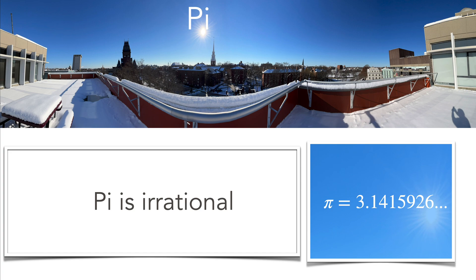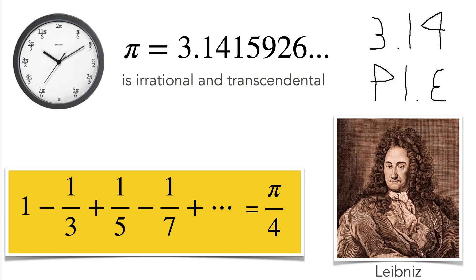Pi, the most exciting number, maybe, in mathematics. It's irrational, it's also transcendental. There's a formula of Leibniz, again using calculus, which is 1 minus 1/3 plus 1/5 minus 1/7, that's pi over 4.